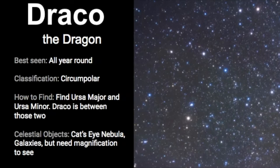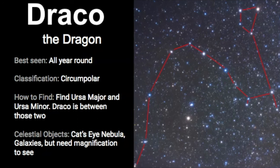We've come to the end of our video about Draco, so let's review. It's best seen all year round in the northern hemisphere and classified as a circumpolar constellation — it circles around the pole star. The best way to find it is to use Ursa Major and Ursa Minor; the tail of Draco is in between the two. There are a few celestial objects such as the Cat's Eye Nebula and a couple of galaxies, but you would need magnification to see all of them. This is a constellation that has taken me years to find, but now that I know the tail is in between the two dippers I'm able to find it. Seek out dark skies, and I wish you luck finding Draco. Remember: practice makes perfect — keep going outside and keep looking up.